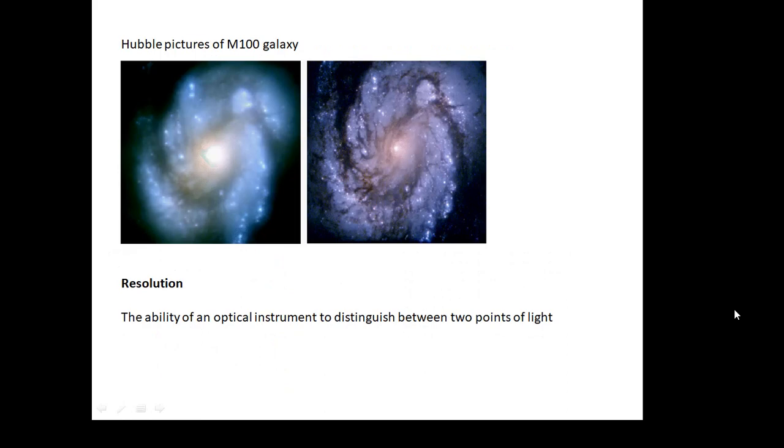Resolution, what does resolution mean? Now, here are two Hubble pictures of the M100 Galaxy, and the resolution is better. The one on the right, we can see a lot more detail. We can see a lot more of the tiny little stars much more clearly. There's more separation between them. Resolution, it's the ability of an optical instrument to distinguish between two points of light. If your resolution is good, you'll see two distinct little points of light. If it's poor, then they will blur into one. So, good resolution means lots of detail, lots and lots of tiny little stars you can see.